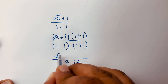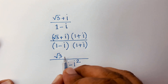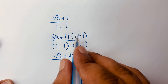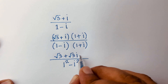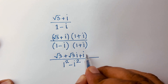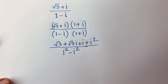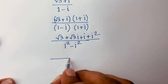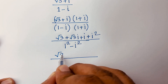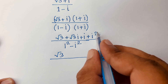For the numerator: square root 3 times 1 gives square root 3, square root 3 times i gives square root 3·i, i times 1 gives i, and i times i gives i squared.